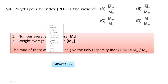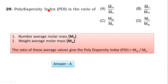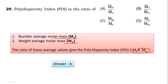Next question 29: Polydispersity index (PDI) is the ratio of weight-average molar mass (Mw) to number-average molar mass (Mn). The ratio Mw/Mn is called the polydispersity index. Option A is correct.